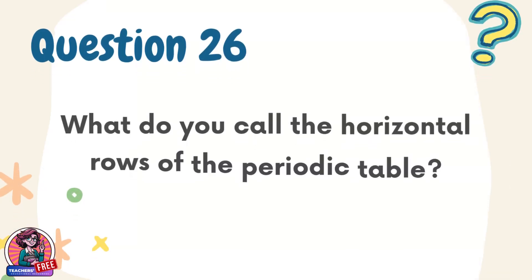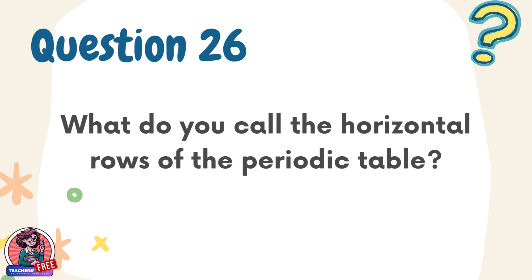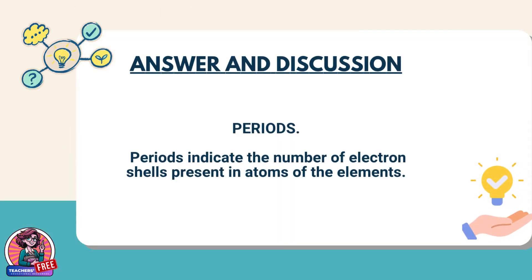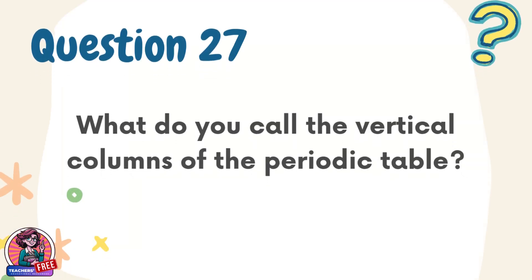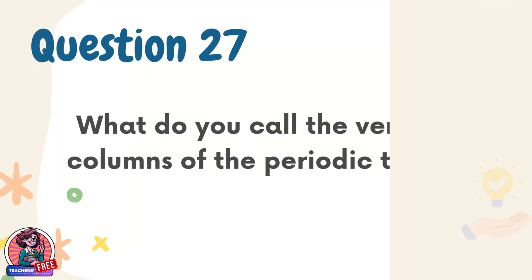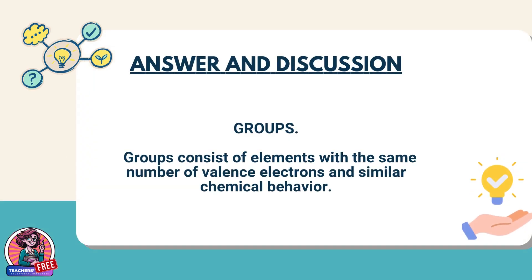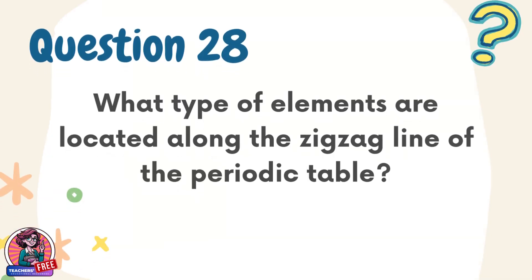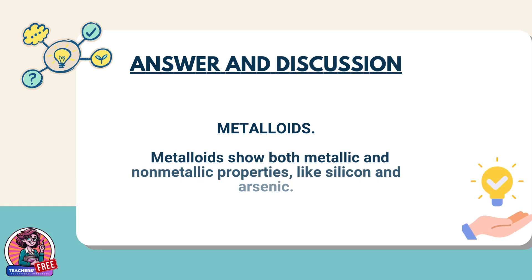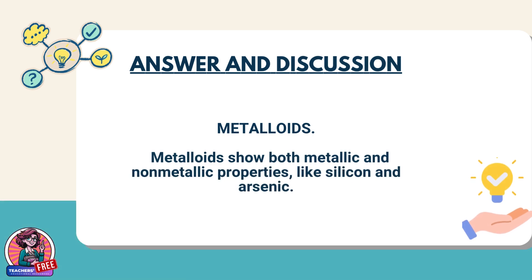Question 26. What do you call the horizontal rows of the periodic table? Answer: Periods. Periods indicate the number of electron shells present in atoms of the elements. Question 27. What do you call the vertical columns of the periodic table? Answer: Groups. Groups consist of elements with the same number of valence electrons and similar chemical behavior. Question 28. What type of elements are located along the zigzag line of the periodic table? Answer: Metalloids. Metalloids show both metallic and non-metallic properties, like silicon and arsenic.